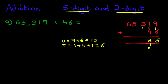The hundreds, we've got 3 plus 0. The answer is 3. The thousands, we've got 5 plus 0. The answer is 5. And lastly, the ten thousands, 6 plus 0. The answer is 6.